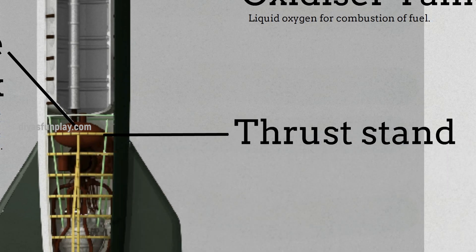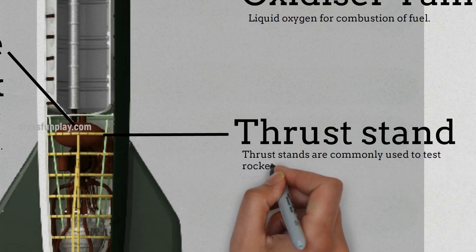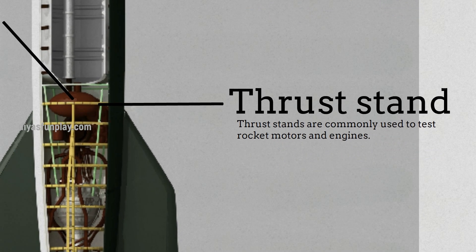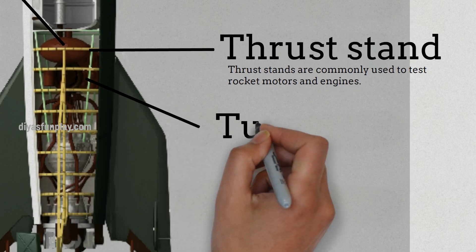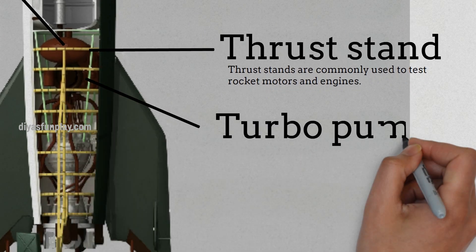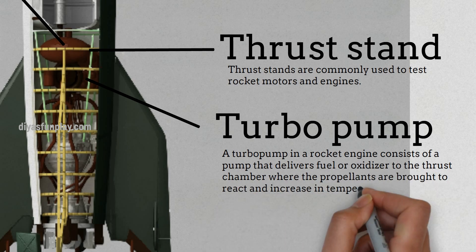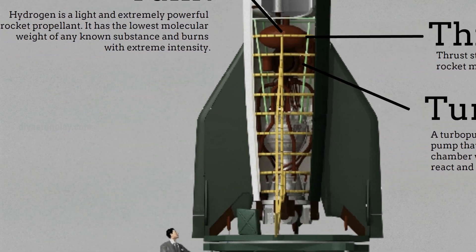Thrust stand. Thrust stands are commonly used to test rocket motors and engines. Turbo pump. A turbo pump in a rocket engine consists of a pump that delivers fuel or oxidizer to the thrust chamber where the propellants are brought to react and increase in temperature.